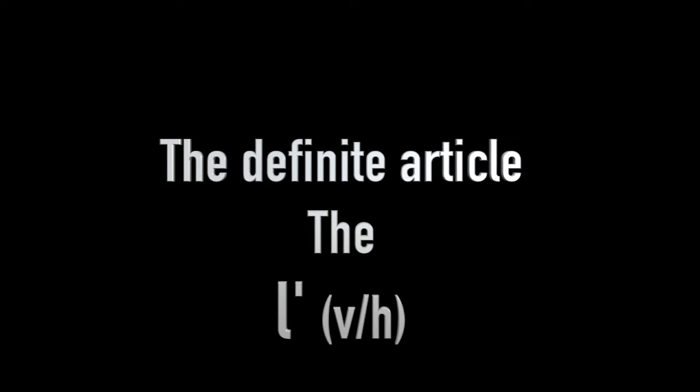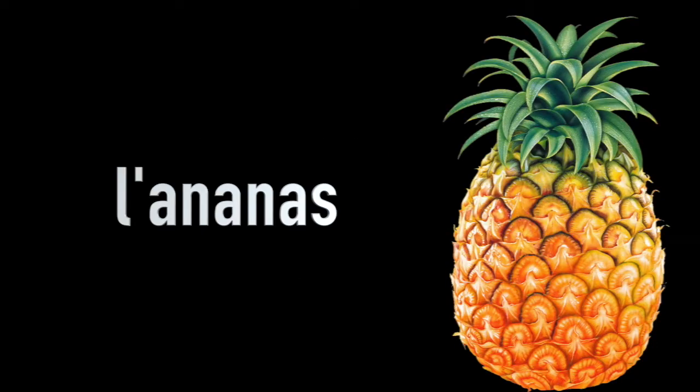Now for those nouns that begin with a vowel or an H, let's take for example the noun pineapple: 'ananas'. If we want to say 'the pineapple', we use an L apostrophe and we flow it in, so we get 'l'ananas', l'ananas — L apostrophe, l'ananas.